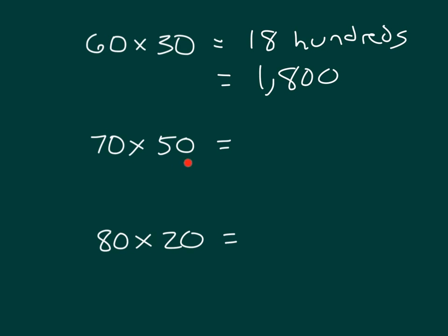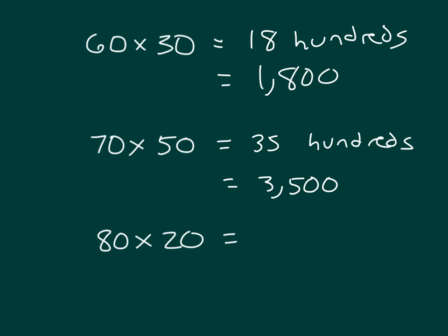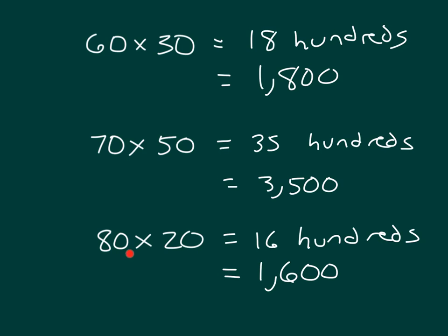Would you be able to do the next one? Seven times five is thirty-five. How do we write thirty-five hundreds in standard form? Seventy times fifty equals — did you say three thousand five hundred? Work out the last one. Pause the video and work it out. It is sixteen hundreds, which equals one thousand six hundred.